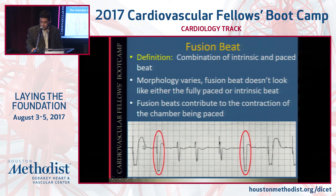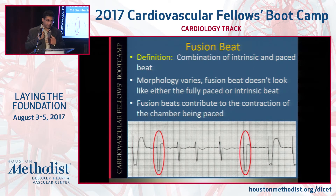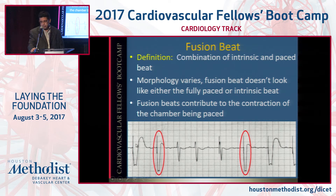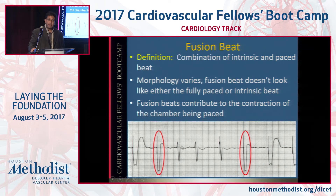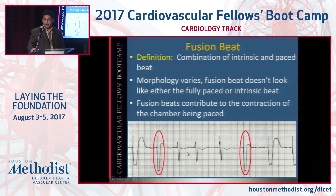Fusion beats are beats where there's activation of the ventricle or atrium from a normal sinus P wave or AV-nodal-generated QRS, and part of the ventricle or atrium is also captured by the pacing spike — both at the same time. You can identify a fusion beat when you see a pacing spike and the resulting QRS morphology is somewhere halfway between the fully paced QRS and a narrow conducted complex. In a patient with atrial fibrillation, for example, you'd see fully paced wide beats, narrow conducted beats, and then fusion beats in between.